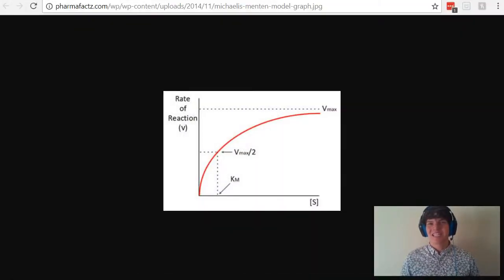Understanding Michaelis-Menten kinetics for the MCAT is crucial. It is tested all the time. And for that reason, it's really important to understand what Km, the Michaelis-Menten constant, really means.